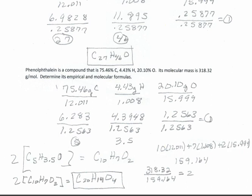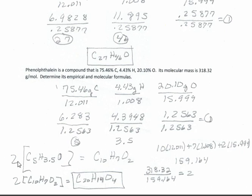The last compound is 75.46% carbon, 4.43% hydrogen, and 20.10% oxygen. Take a 100g sample — those are grams — divide by atomic masses to get moles: 6.283, 4.3948, and 1.2563. Divide the least (1.2563) into all: gives 5, 3.5, and 1. Do not round 3.5 — that half is there for a reason. So the empirical formula is C₅H₃.₅O. Since we can't have half an atom, multiply through by 2: empirical formula becomes C₁₀H₇O₂.